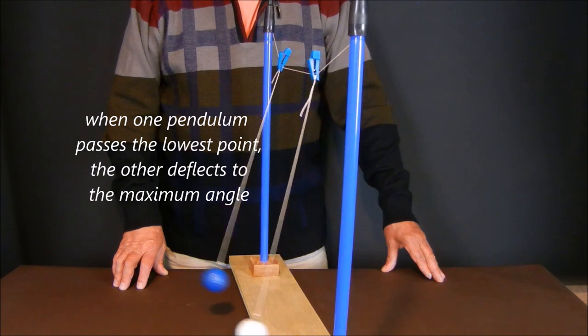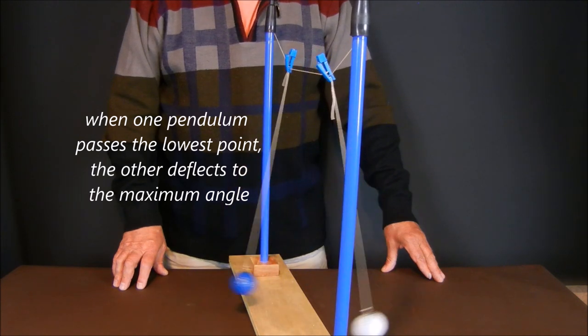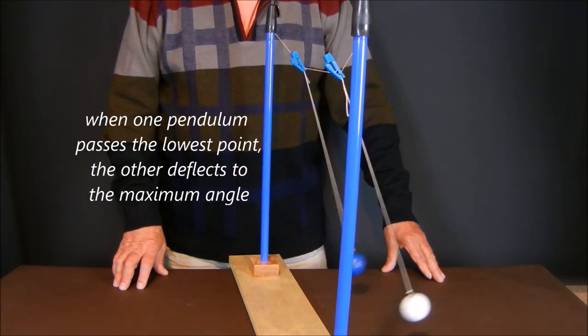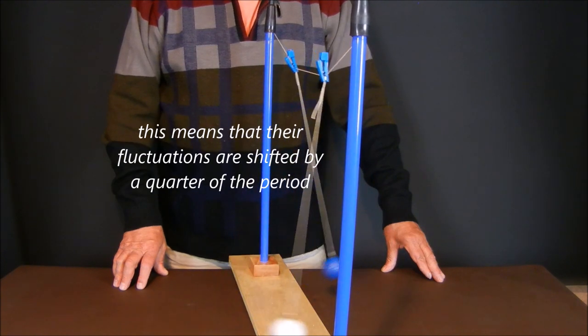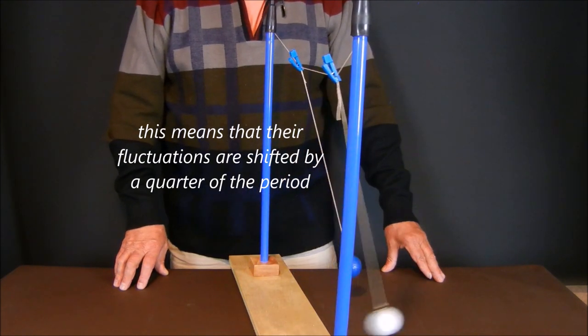When one pendulum passes the lowest point, the other deflects to the maximum angle. This means that their fluctuations are shifted by a quarter of the period.